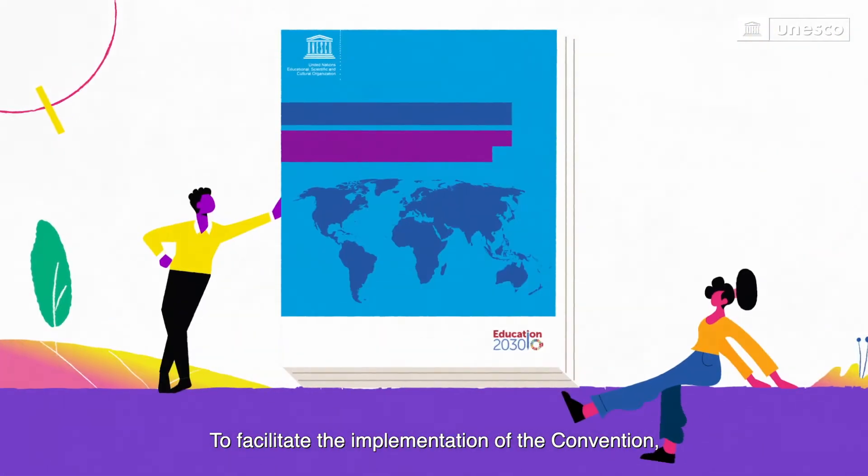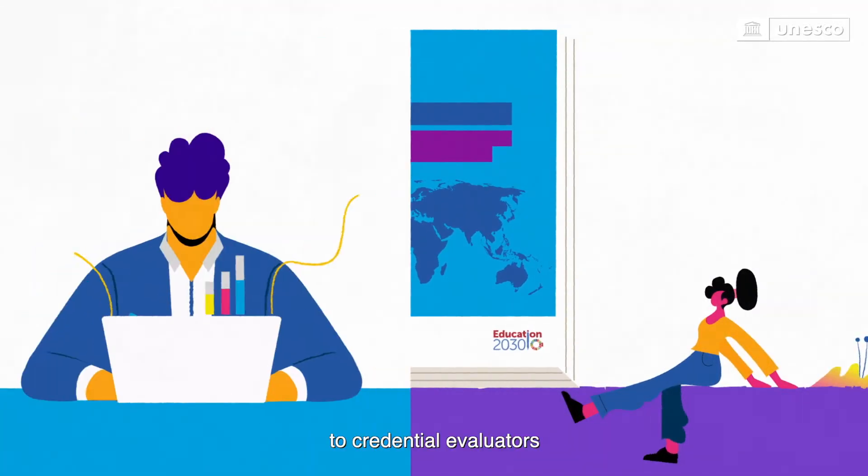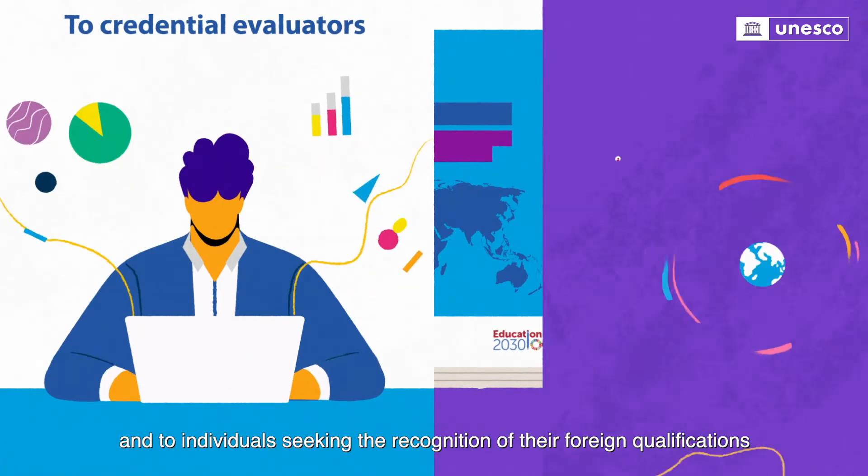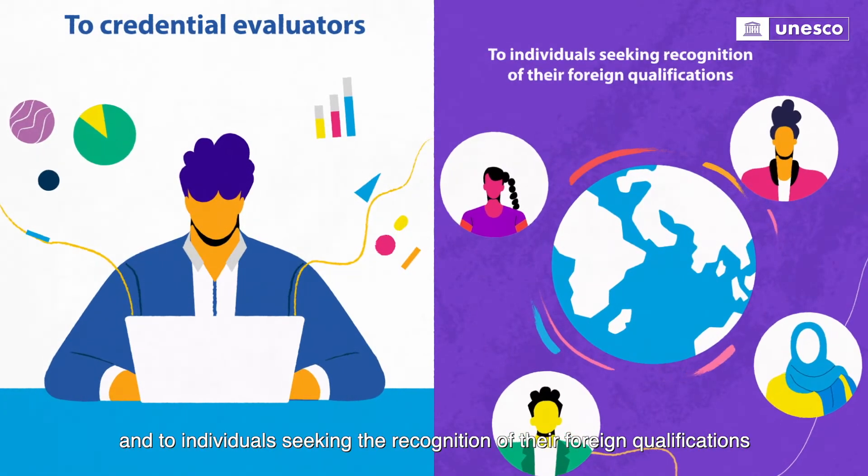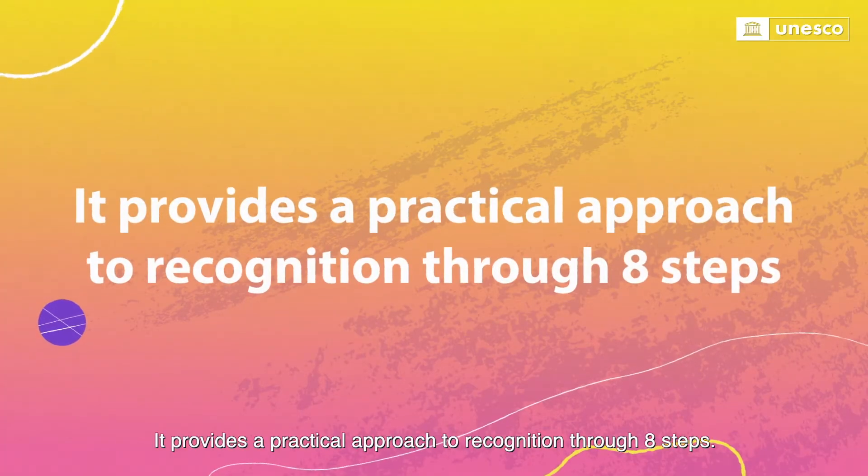To facilitate the implementation of the Convention, UNESCO launched the Practical Guide to Recognition, which is addressed to credential evaluators and to individuals seeking the recognition of their foreign qualifications. It provides a practical approach to recognition through eight steps.